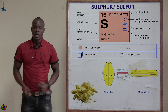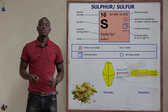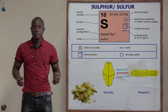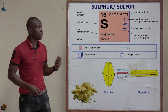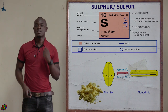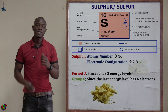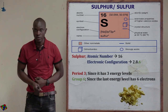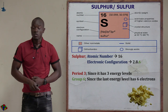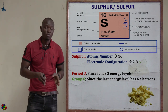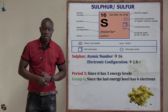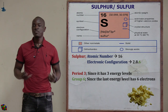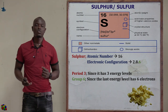Hello and welcome. Today let's look at sulfur and its compounds. Sulfur occurs in group six and period three of the periodic table, with an atomic number of 16.